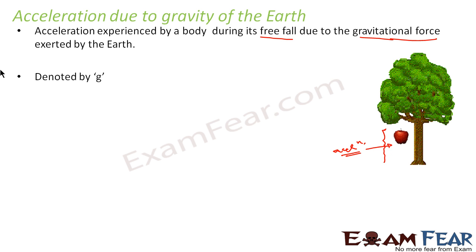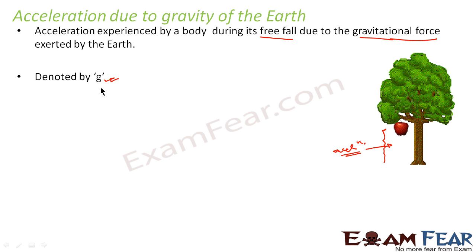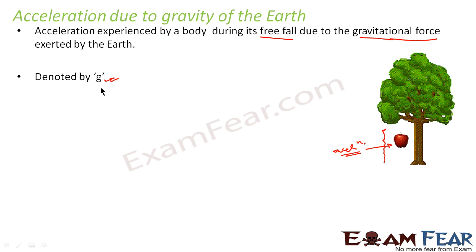Acceleration due to gravity is generally denoted by small g. Don't get confused: capital G represents the universal gravitational constant, and small g represents acceleration due to gravity. Capital G is a constant in the universal law of gravitation whose value remains the same throughout the entire universe, whereas small g is the acceleration of any object during its free fall due to the gravitational force exerted by the earth.